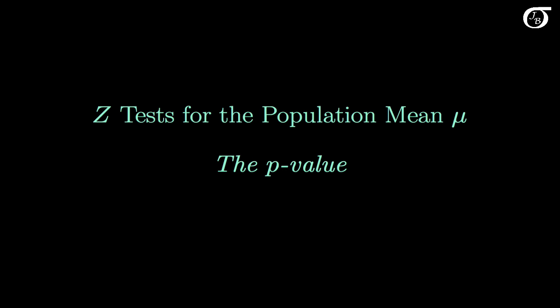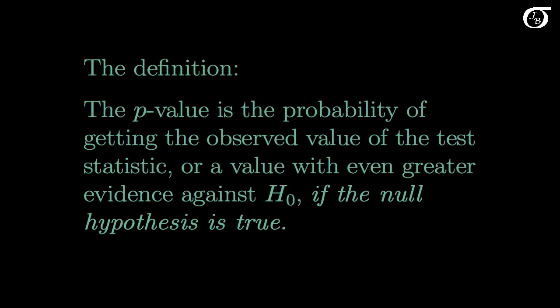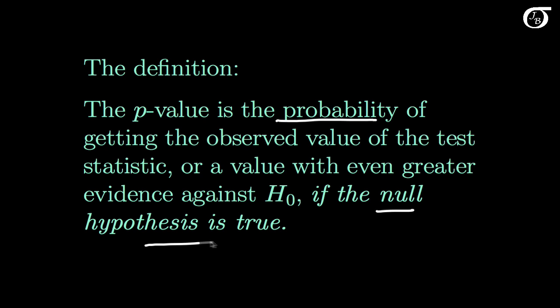Let's take a look at an introduction to the p-value in the context of z-tests for the population mean mu. The p-value is a measure of the strength of the evidence against the null hypothesis that is provided by our sample data. The p-value is the probability of getting the observed value of the test statistic, or a value with even greater evidence against the null hypothesis, if the null hypothesis is true. So the p-value is a probability, calculated conditional on the null hypothesis being true.